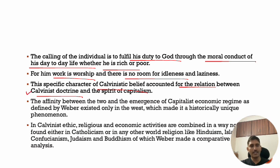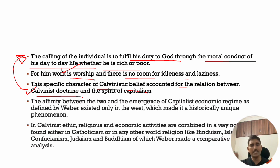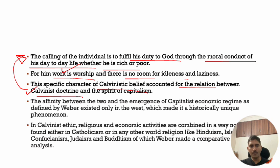This specific character of Calvinist belief accounted for the relation between Calvinist doctrine and the spirit of capitalism. Calvinist doctrine says that man should work for the glory of God, and the only way to do that is to do maximum work — work is worship. These qualities of Calvinism are the reason capitalism developed. So Weber chose few characteristics of capitalism — there could be many traits, but he took two main ones: rationalization of work and maximization of profit.